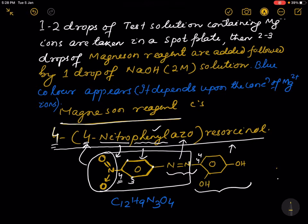The molecular formula is C12 because there are 2 benzene rings, so there are 12 carbon atoms. The number of hydrogen atoms is 9, and there are 3 nitrogen atoms. Number of oxygen atoms: 1, 2, 3, 4. So the molecular formula of magnesium reagent is C12H9N3O4.